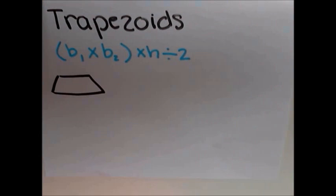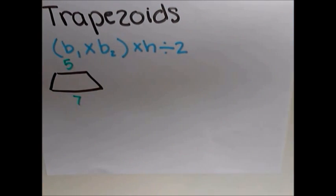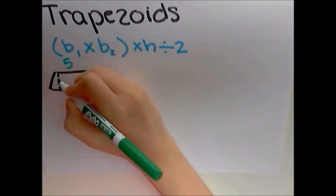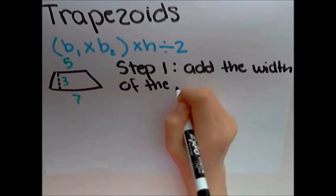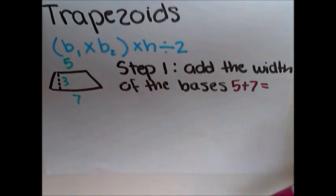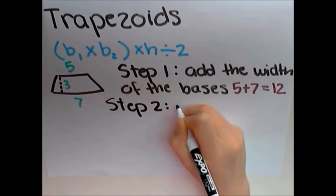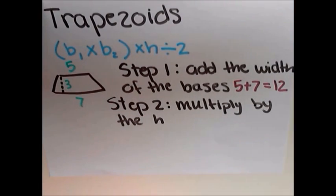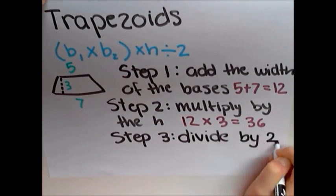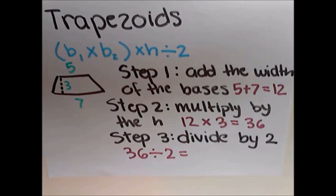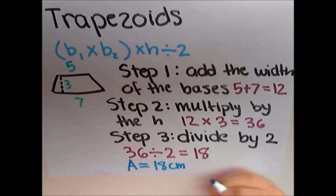I'm using a trapezoid with the first base of 5 and the second base of 7 and a height of 3. Step 1: Add the two bases. In this example, add 5 plus 7. Step 2: Multiply that by the height or, in this example, by 3. Step 3: Divide that by 2. The area for this trapezoid is 18 centimeters.